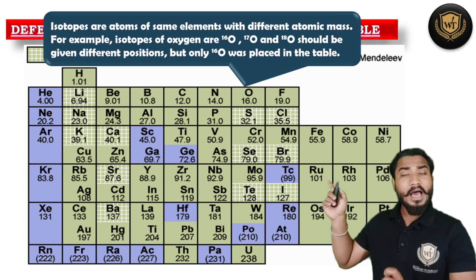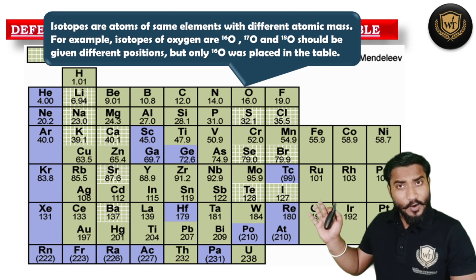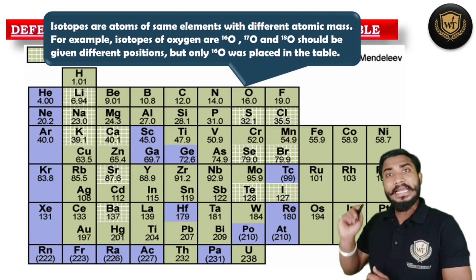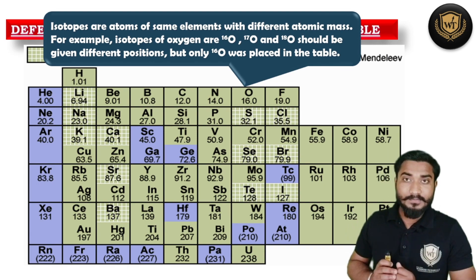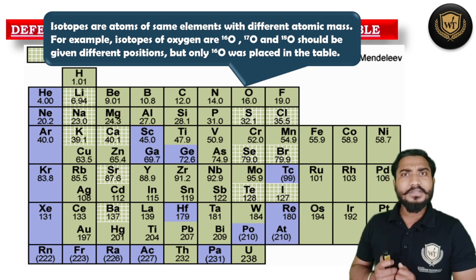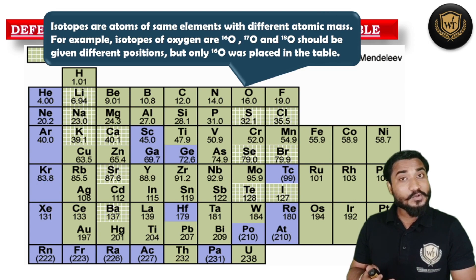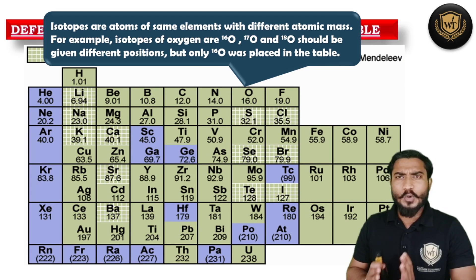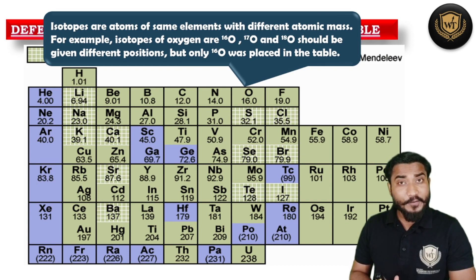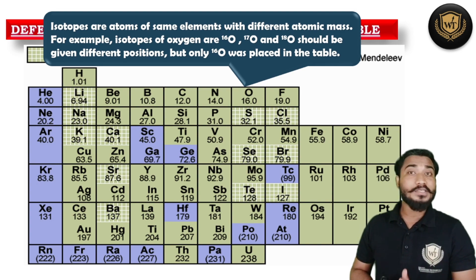But technically, isotopes are chemically similar — they have similar chemical properties. So there was a confusion regarding the position of isotopes. For example, there are three isotopes of oxygen: Oxygen-16, Oxygen-17, and Oxygen-18. They all have different masses, so in Mendeleev's table they should be given different positions. But they are atoms of the same element with similar chemical properties. So based on properties, they would get one fixed position, but based on mass, they would get different positions — causing confusion.